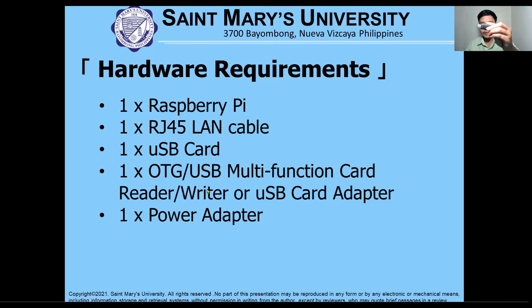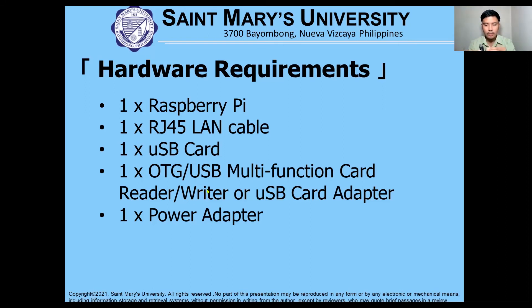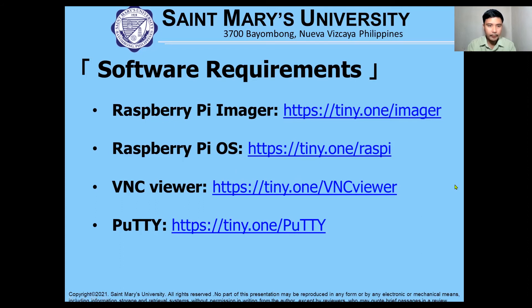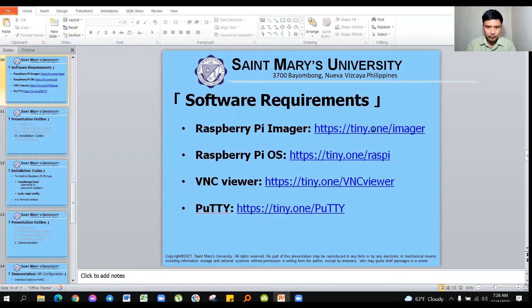I have here an OTG USB multi-function card reader/writer. You simply plug it into your computer's USB port and insert the micro SD card into the reader. You will also need a power adapter to power up your Raspberry Pi. For the software requirements, we will be using the Raspberry Pi Imager, the Raspberry Pi OS, the VNC Viewer, and the PuTTY terminal.